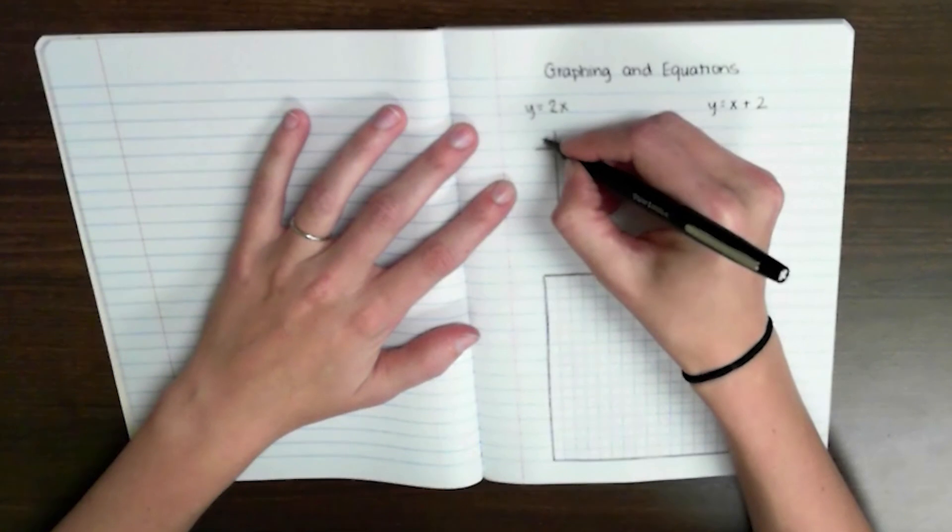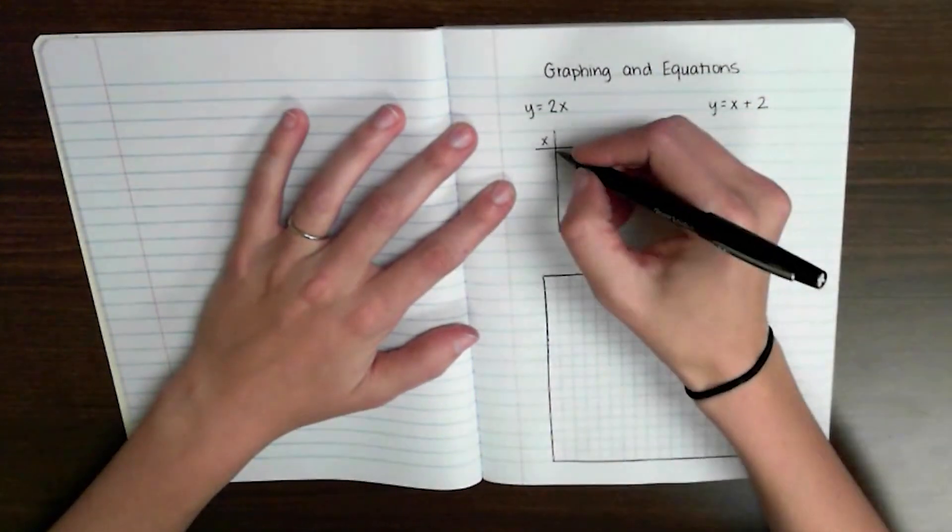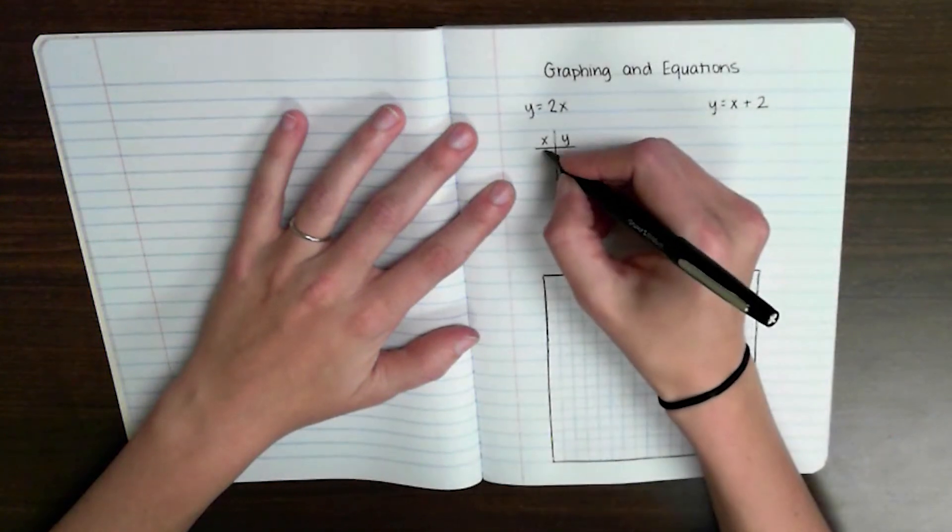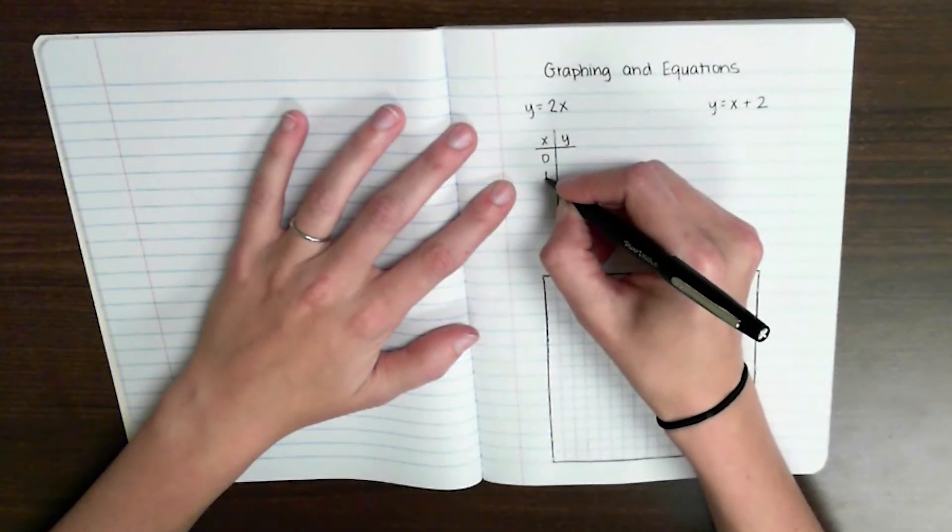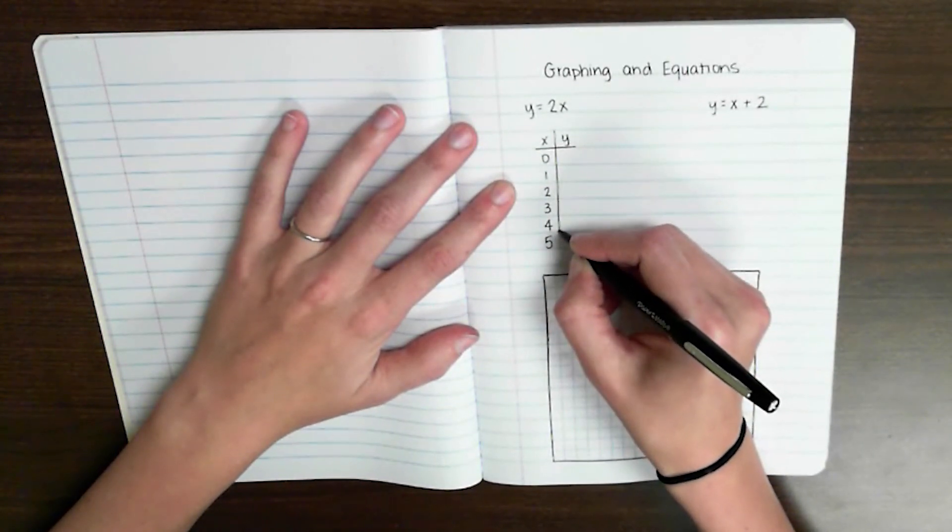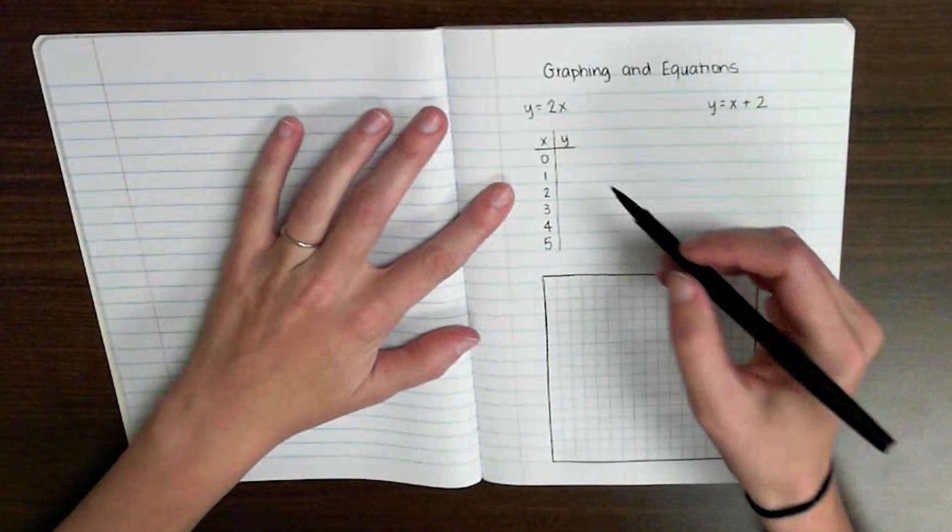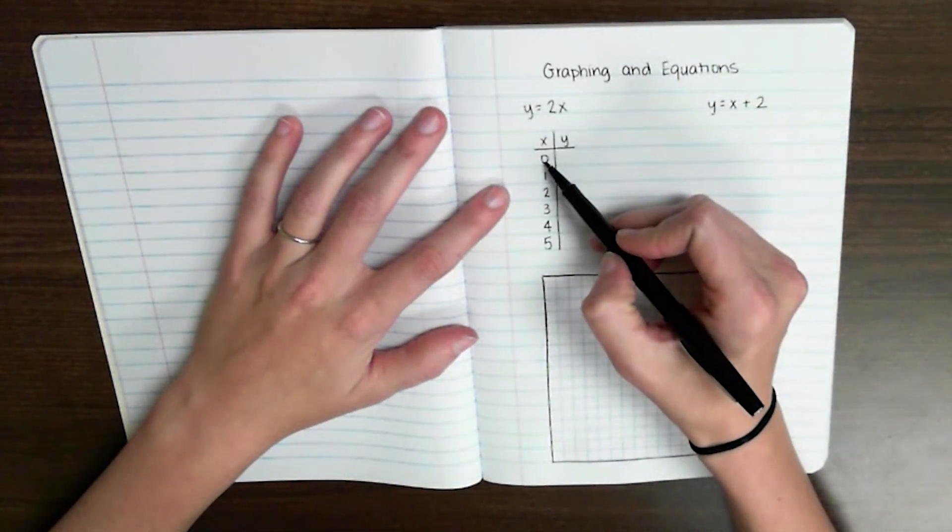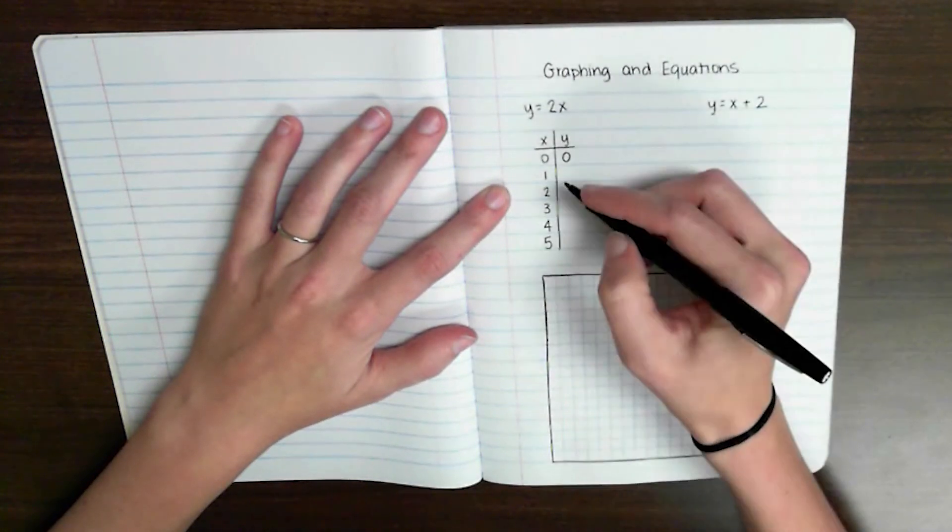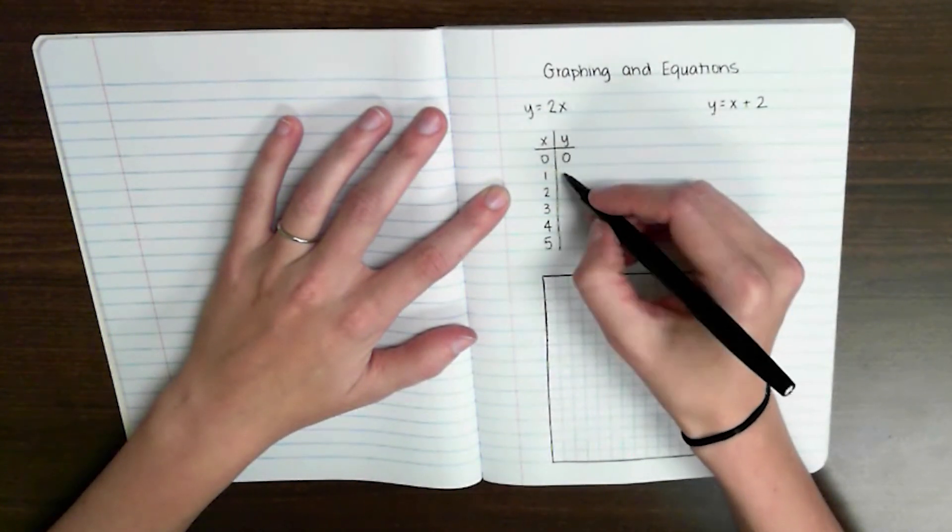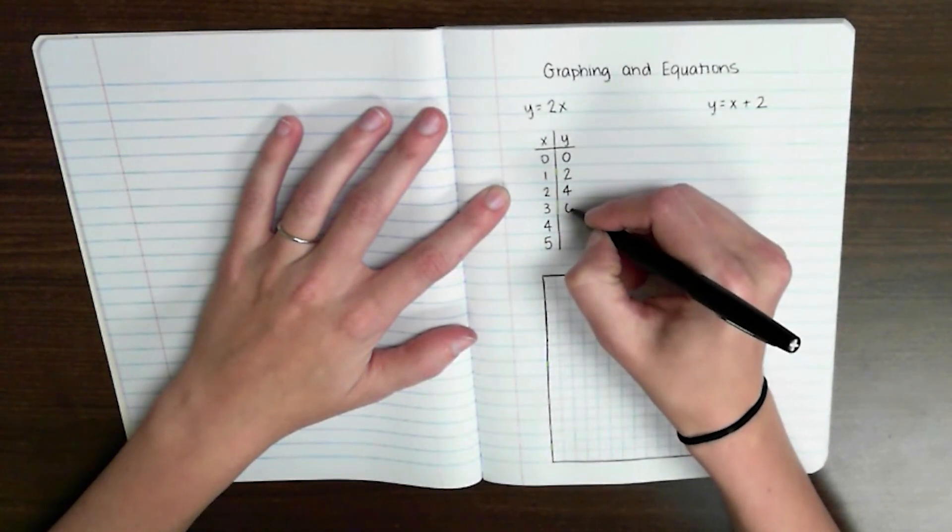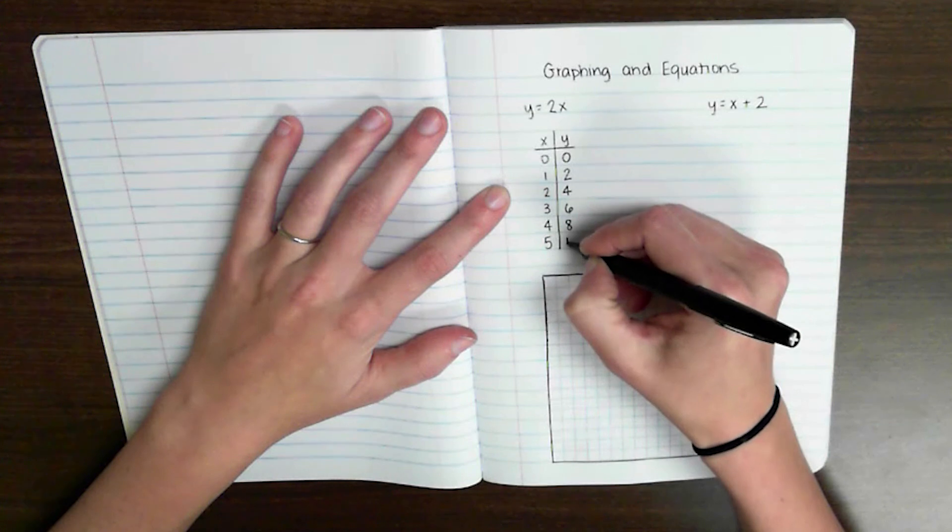So you should be pretty practiced now at making an input output table with these rules. So I've got a table with the input or the x and the output or the y. So if I wanted to use the numbers for x, 0, 1, 2, 3, 4, and I'm going to add one more, 5. If I follow my rule, which is to take the x value and multiply it by 2, I would end up with values like 0, 1 times 1, y equals 2, 1 times 2, y equals 4, 6, 8, and 10.